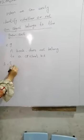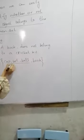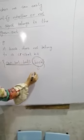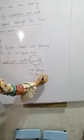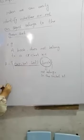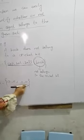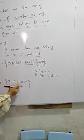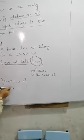Consider set A = {cap, bat, ball}. The first three elements belong to the cricket kit, but a book does not belong — so that set is not well-defined. Another example: A is the set of vowel letters — A, E, I, O, U. These five letters belong to the vowels family, so this set is well-defined.